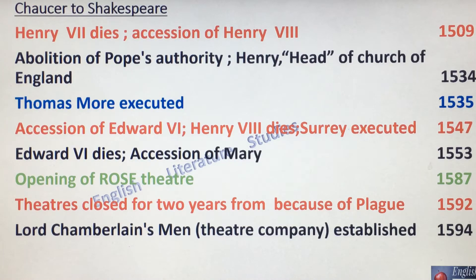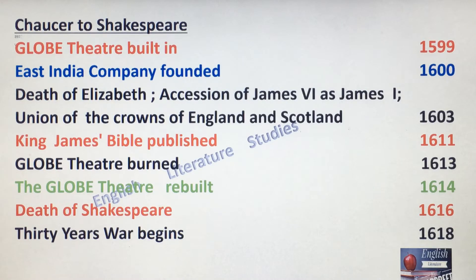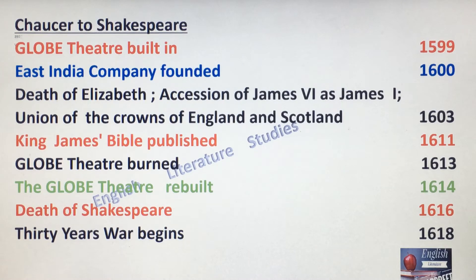Lord Chamberlain's Men — this is the name of the theatre company that was established in 1594. Globe Theatre was built in 1599. East India Company was founded in 1600. Death of Elizabeth and the Union of the Crowns of England and Scotland, 1603. King James Bible was published in 1611. Globe Theatre was burned in 1613 and was rebuilt in 1614. I have already made a video on Renaissance Theatre in which I have discussed about the Globe Theatre, so you can also watch that video.